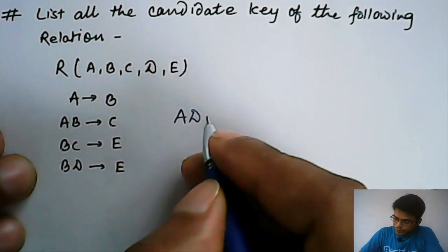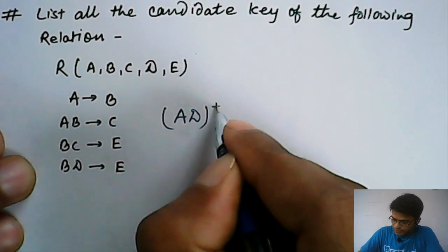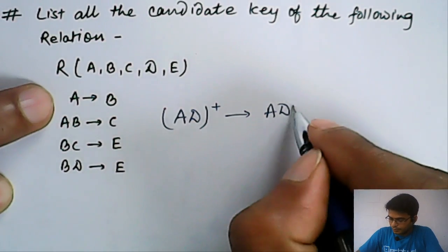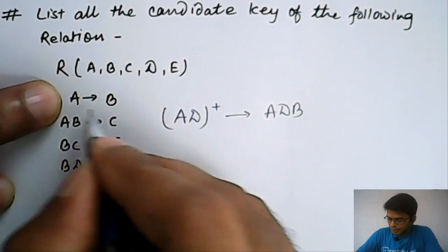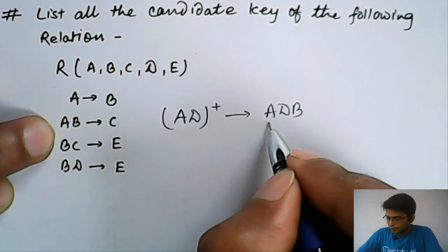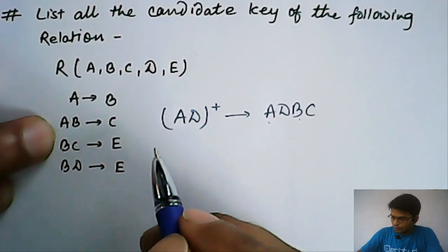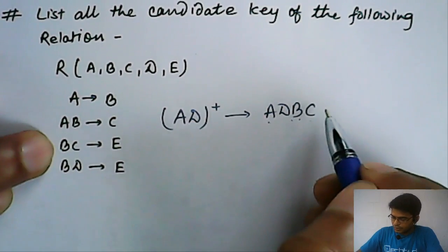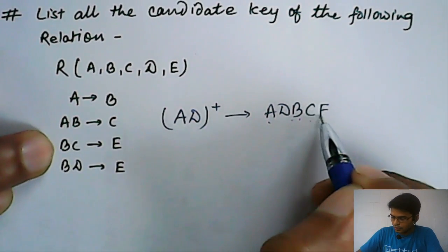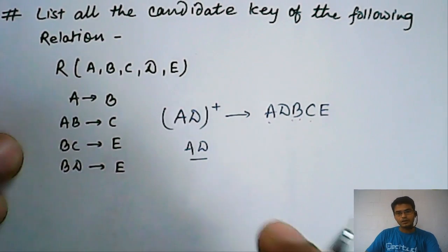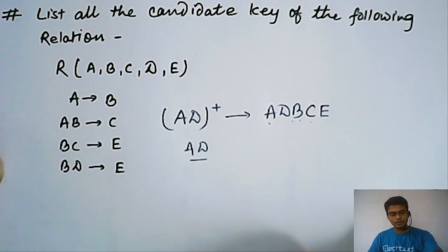OK, now what we will do, we will find the closure of these attributes. So, the closure will be A, D which is obviously there. Then B. From A, we can determine B. That's why B. And from A and B, we can determine C. So, C. Now, from B and C, we can also determine E. OK. So, the candidate key will be AD. OK, fine. Thank you.